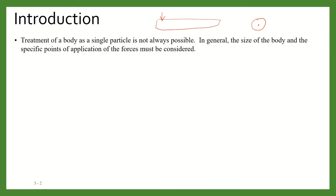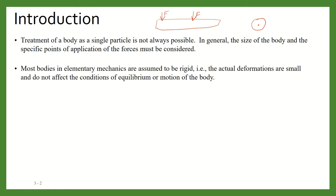The point of application is important because if the force is applied here it will have some different consequence, and if this force is applied at a different point it will have different consequences. So the point of application of the force matters. Most bodies in elementary mechanics are assumed to be rigid — this is also a very important point.